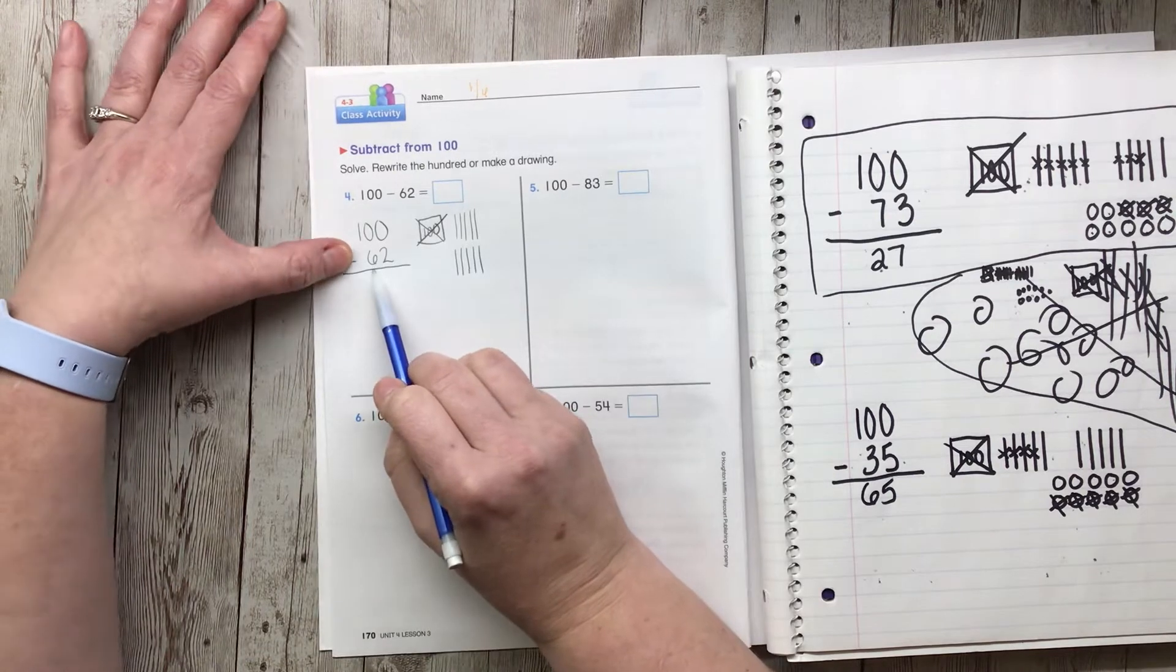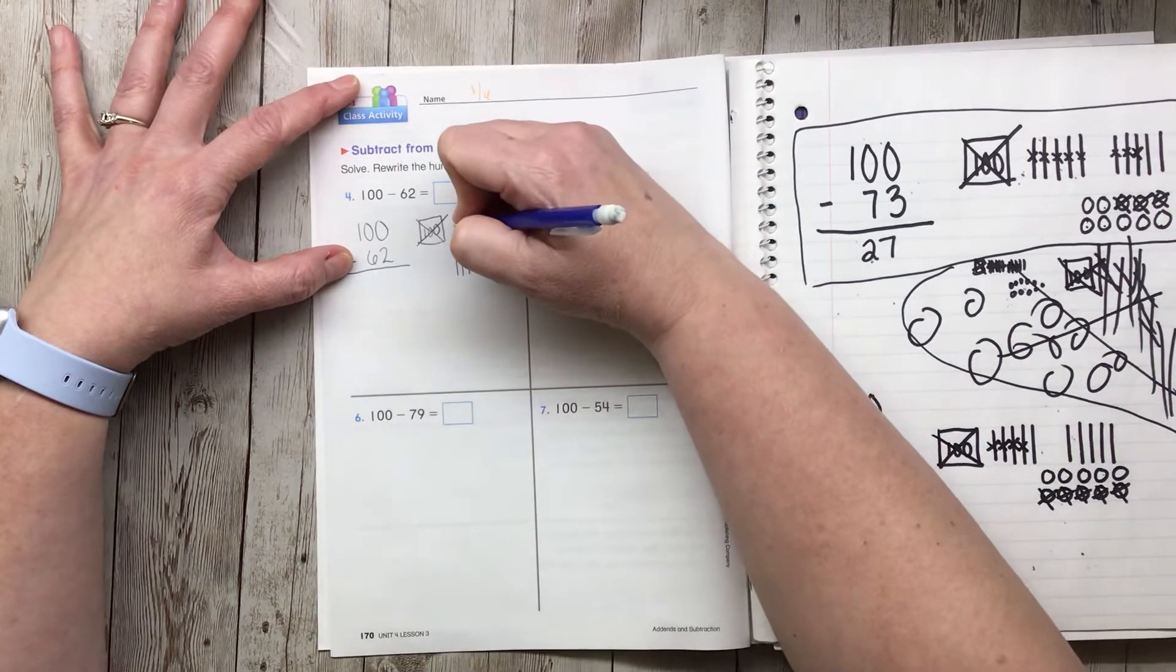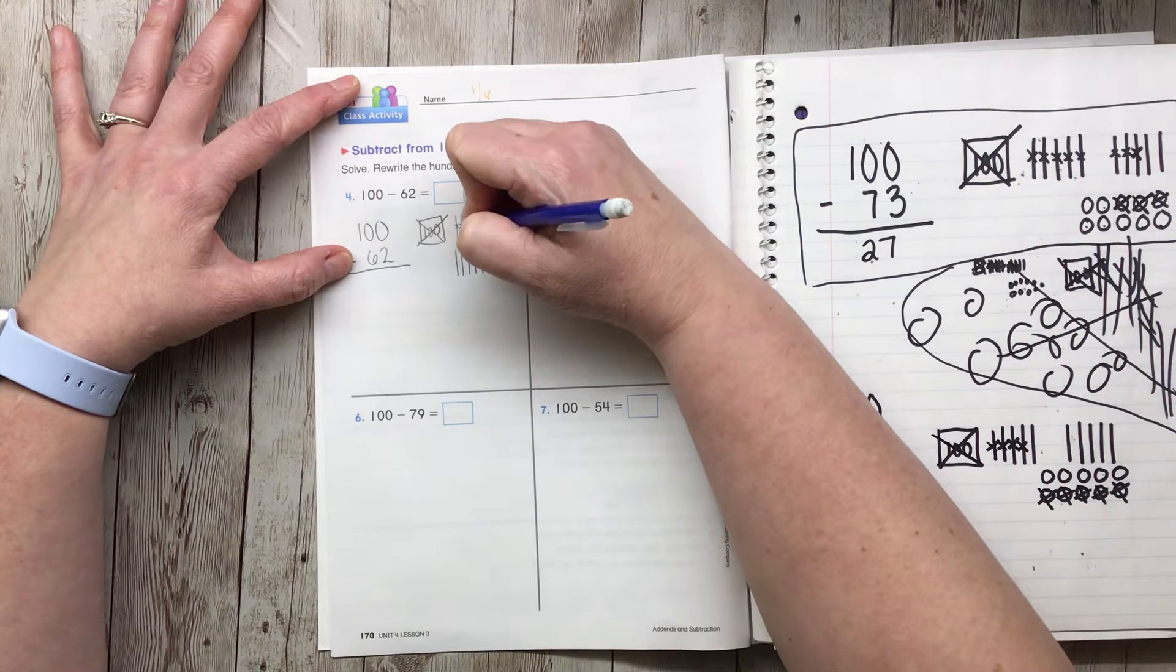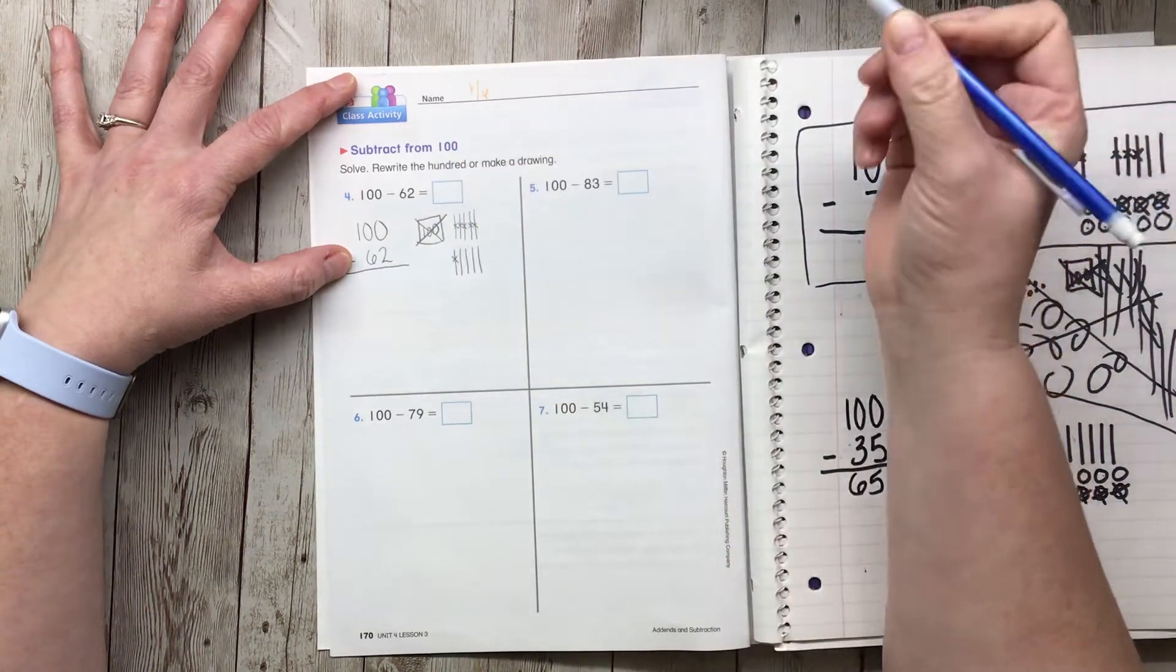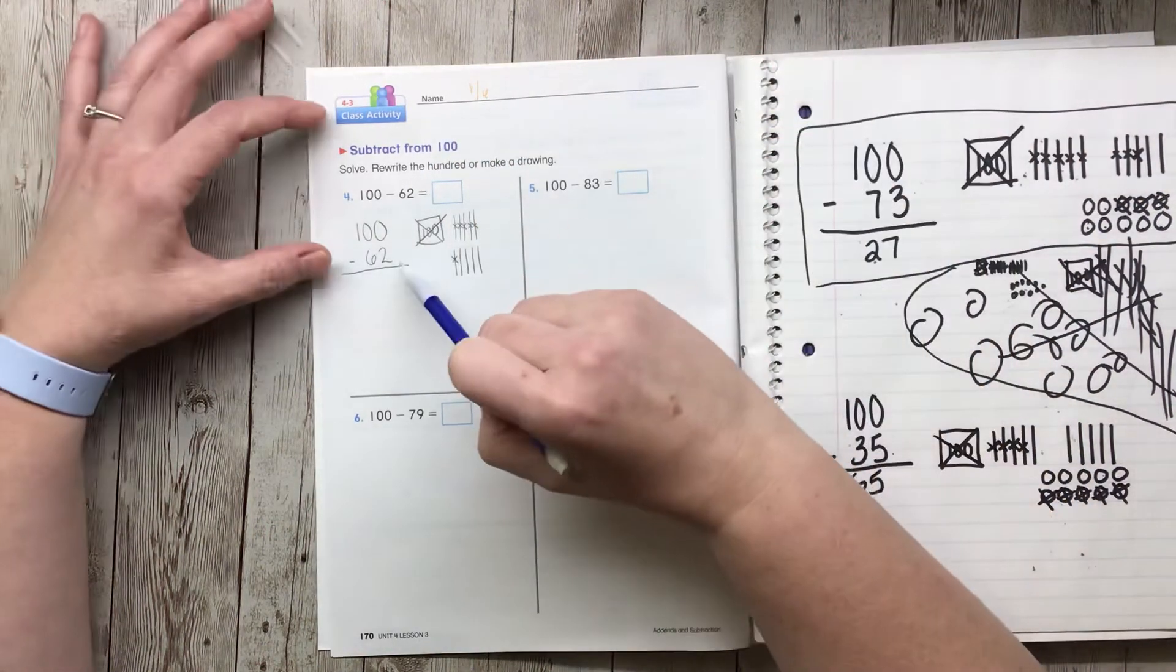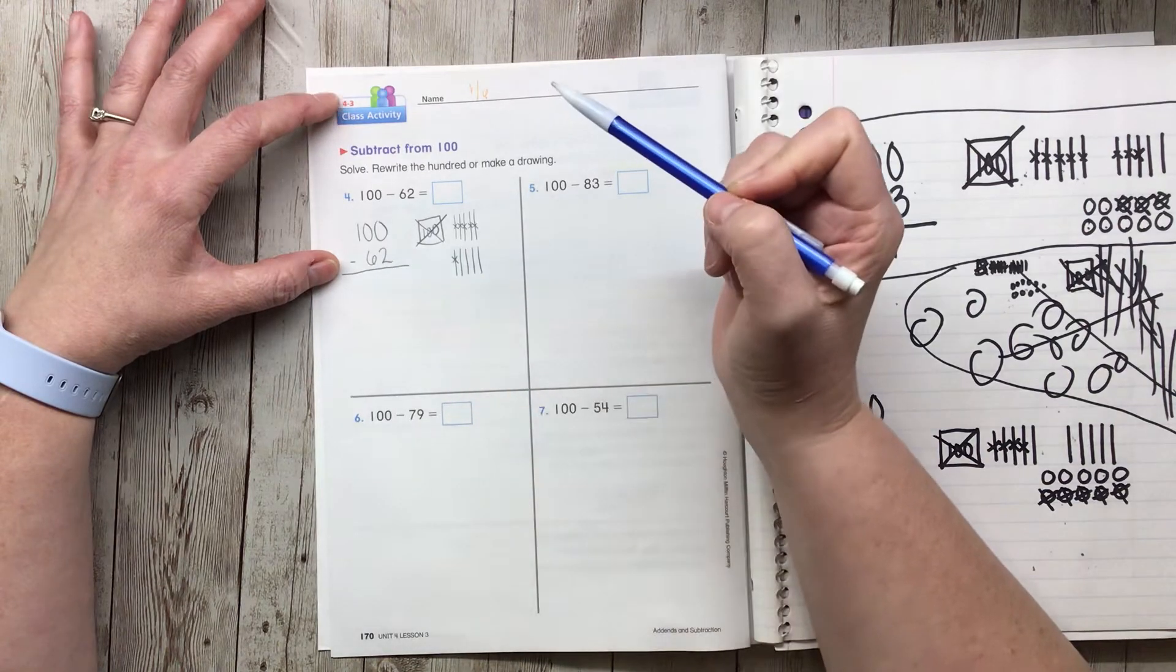Now I can take my 6 tens and X those out right away. 1, 2, 3, 4, 5, 6. But I'm not done because I have some ones here, and I need to figure out a way to X those out.